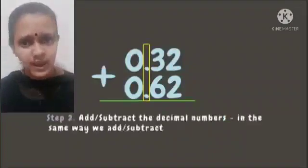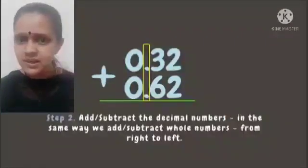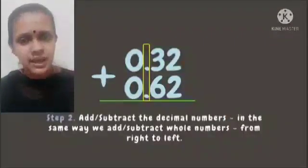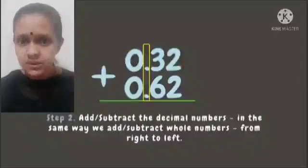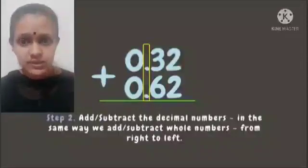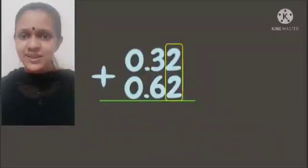Now we are going to add or subtract decimal numbers in the same way we add or subtract whole numbers, which is from right to left. Let's add.